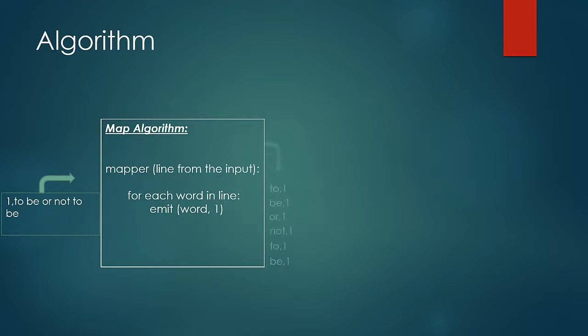So output would be to comma 1, be comma 1, or comma 1, not comma 1, to comma 1, and be comma 1. The 1 would signify that the word has been encountered once.